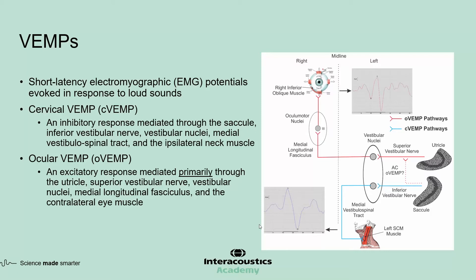Cervical VEMPs or C-VEMPs are inhibitory responses that originate from the saccule and travel through the inferior portion of the vestibular nerve to the vestibular nuclei, and then through the medial vestibular spinal tract, and finally activate the ipsilateral neck muscle.